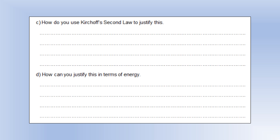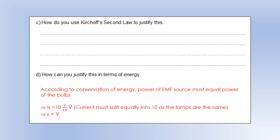How can we justify this in terms of energy? The power of the EMF source must equal the power of the bulbs combined. Power input is current times EMF. For the bulbs, there are 10 of them and the current through each must be I over 10 — using Kirchhoff's current law — and the potential difference is V. We end up with EMF equal to V, giving the same expression.